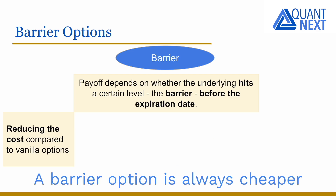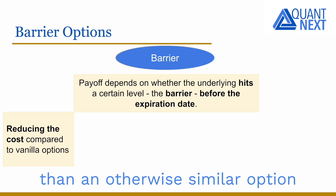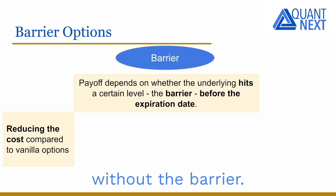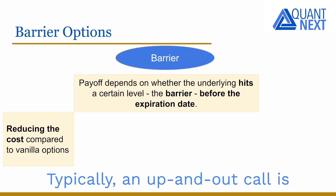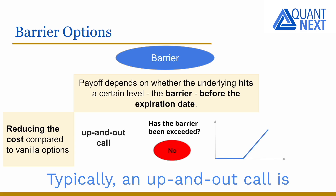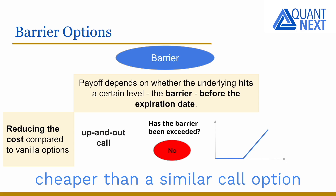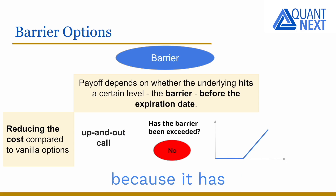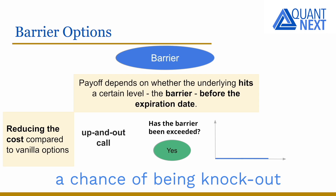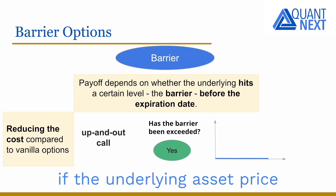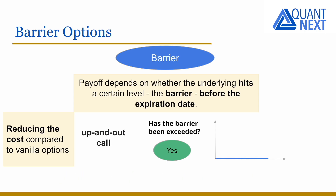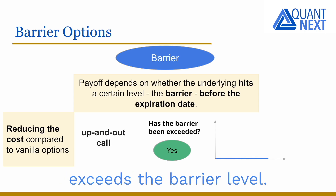A barrier option is always cheaper than an otherwise similar option without the barrier. Typically, an up and out call is cheaper than a similar call option without the barrier because it has a chance of being knocked out if the underlying asset price exceeds the barrier level.